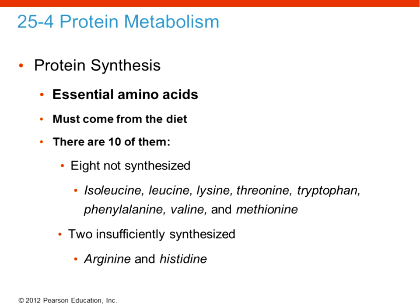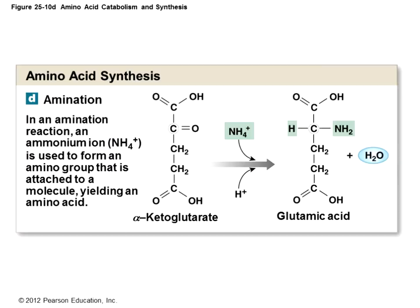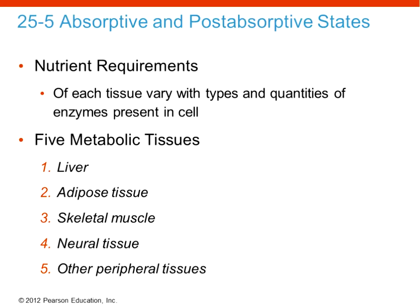Protein synthesis is the preferred direction. There are ten essential amino acids that come from the diet — eight are not synthesized by the body and two are insufficiently synthesized. Non-essential amino acids are made by the body through a process called amination, which uses the ammonium ion. The ultimate goal with proteins is using the anabolic pathway for protein synthesis.